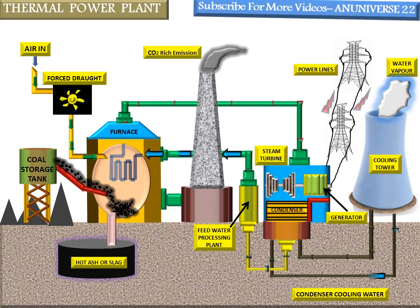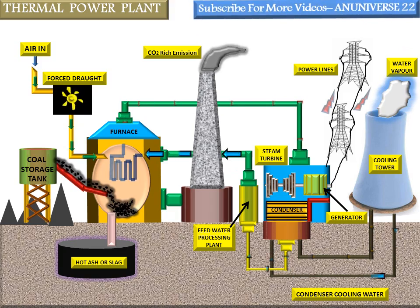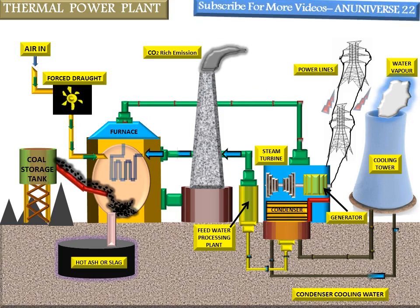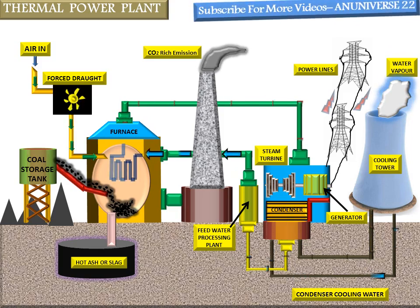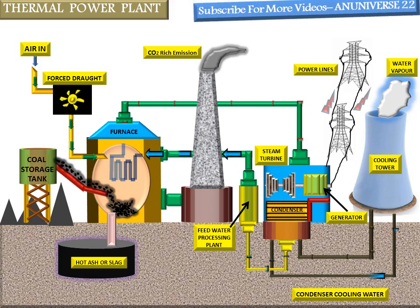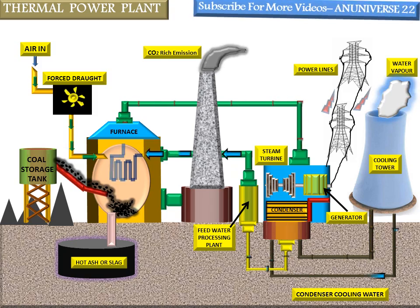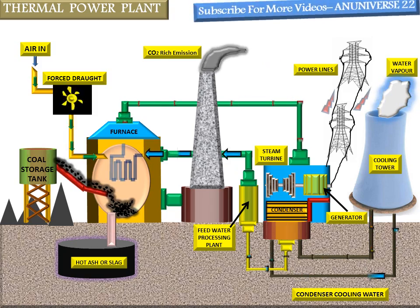This arrangement is very beneficial when we need to fulfill the conditions of a base load plant, and generally these are known as base load plants. This source of power generation is very useful and most effective for developing countries. Today we discussed the thermal power plant, its working, main components, and how each component works.